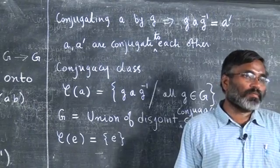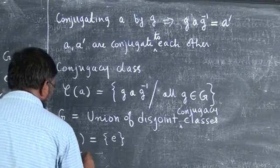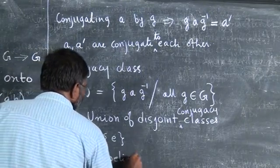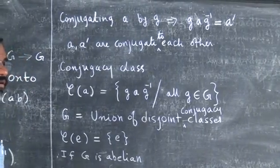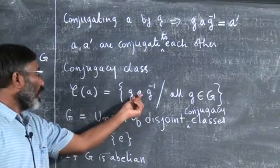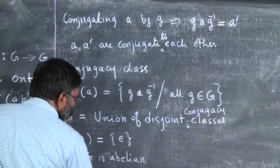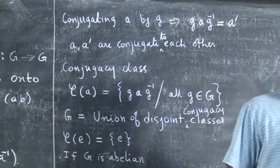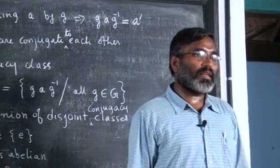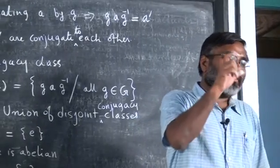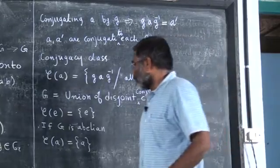Suppose I have an abelian group and I take any element a. If G is abelian, I can flip g and a, so g·a·g⁻¹ = a·g·g⁻¹ = a. I will always get the same element. So in an abelian group every element is a class by itself; no element is conjugate to any other element. The number of elements equals the number of classes. But in a non-abelian group you can have classes with more than one element, and the whole group is a union of disjoint classes.